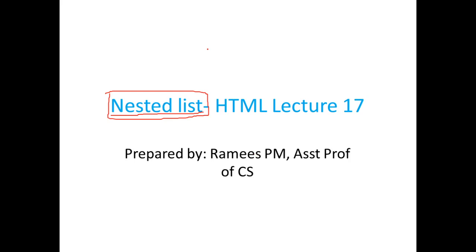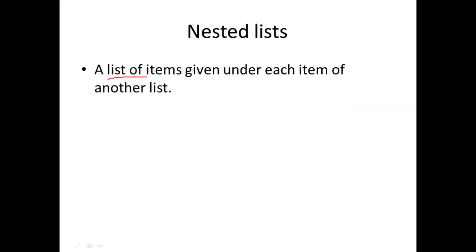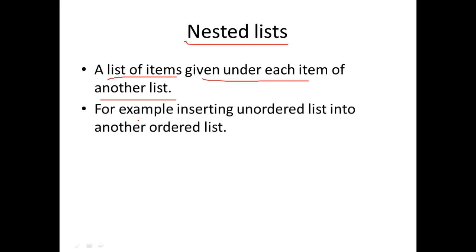To display such information, we use the concept of nested list. A nested list is a list of items given under each item of another list - that is, one list of items to be contained in another list. For example, inserting an unordered list into another ordered list.